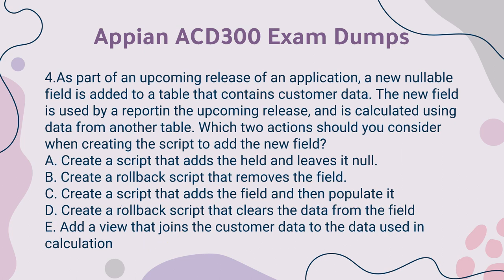Question 4: As part of an upcoming release of an application, a new nullable field is added to a table that contains customer data. The new field is used by a report in the upcoming release and is calculated using data from another table. Which two actions should you consider when creating the script to add the new field? A. Create a script that adds the field and leaves it null. B. Create a rollback script that removes the field. C. Create a script that adds the field and then populate it. D. Create a rollback script that clears the data from the field. E. Add a view that joins the customer data to the data used in the calculation.